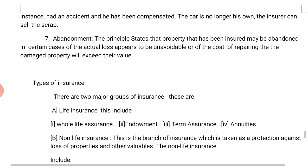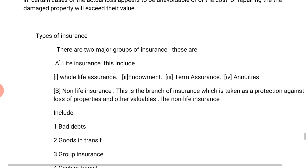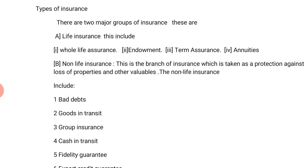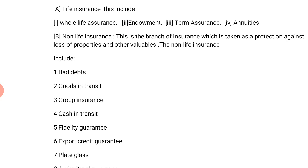Those are the basic principles of insurance. Now let us move to types of insurance. There are two major groups of insurance. The first is life insurance, which includes whole life insurance, endowment, term insurance, and annuities.